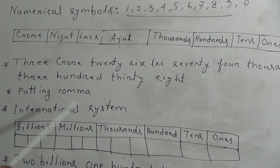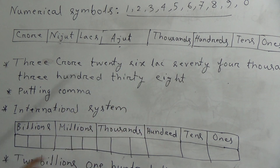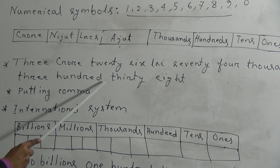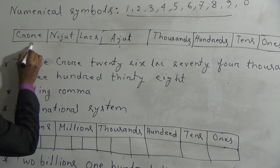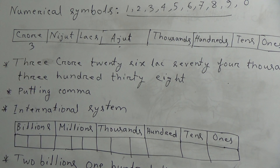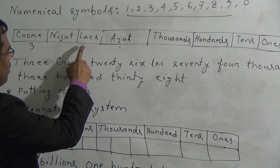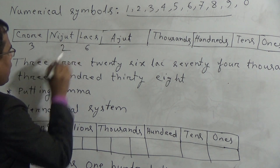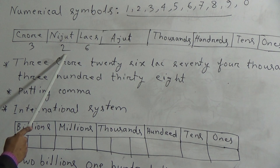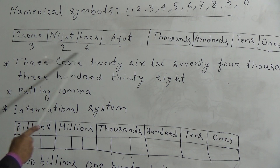Now students, here is a number: 3 crore 26 lakh 74,338. We want to write this number using digits. There are 3 crores, so in the crore place we write 3. Then 26 lakhs — we write 6 in the lakhs place and 2 in the ten-lakhs place. At the time of reading, we will not say 2 ten-lakhs and 6 lakhs; we will say 26 lakhs.